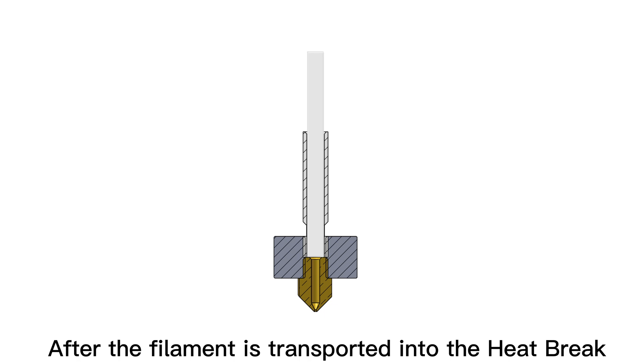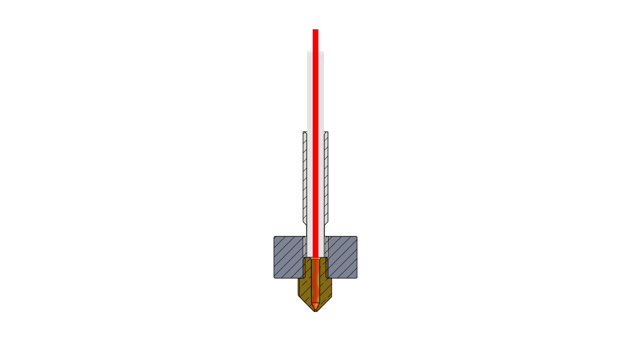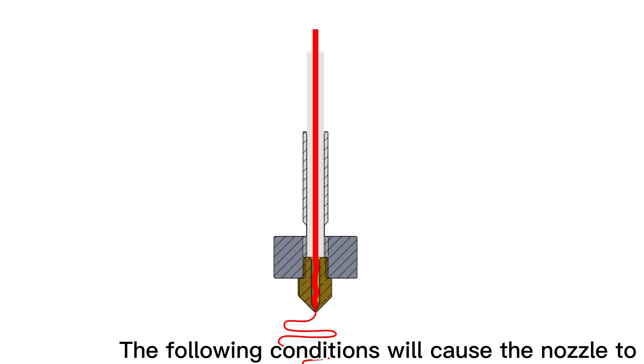After the filament is transported into the heat break from the filament tube, it melts in the nozzle and finally comes out of the nozzle. The following conditions will cause the nozzle to become clogged.